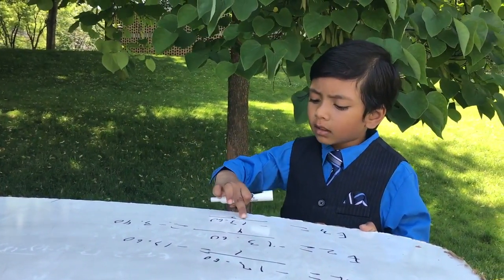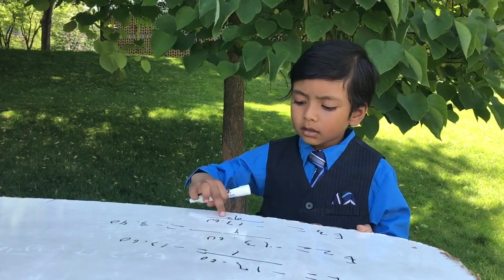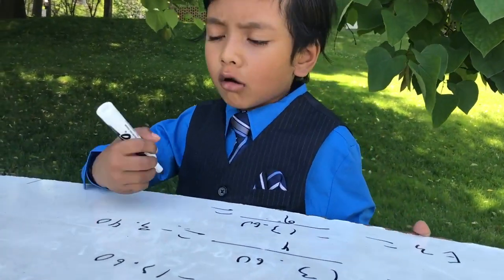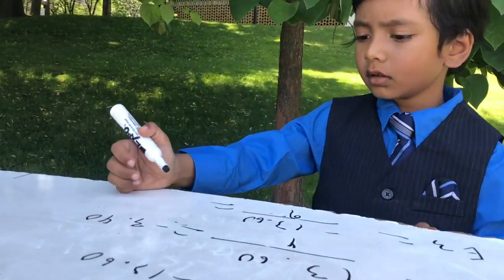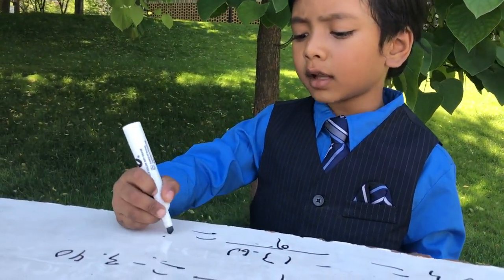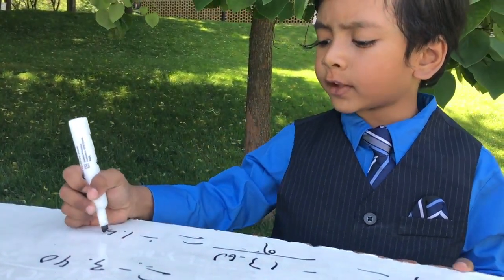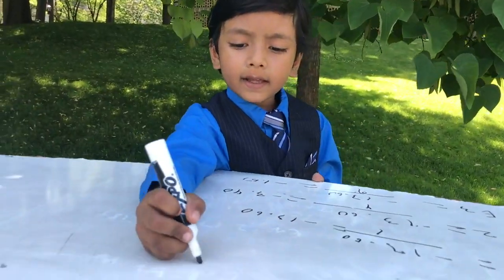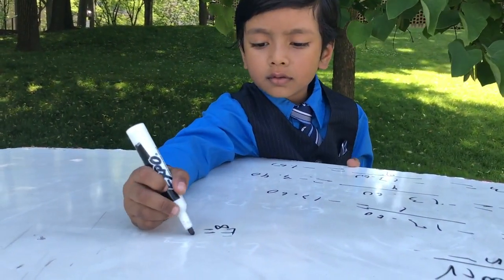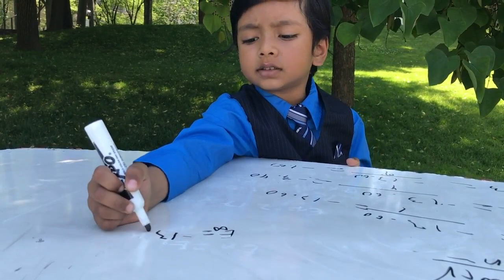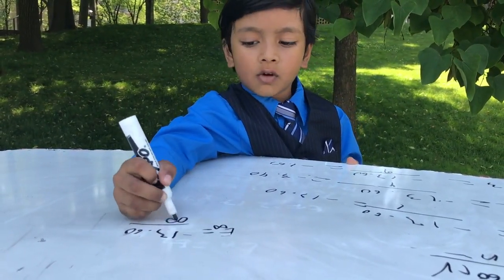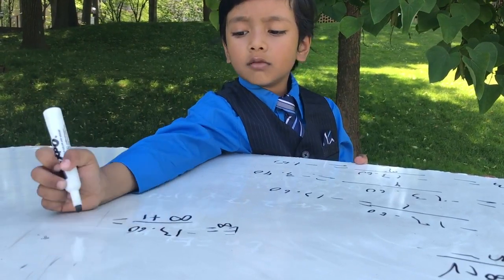E3 is negative 13.60 over 3 squared, which is 9. And for n=5 squared, which is negative 13.60 over 25.